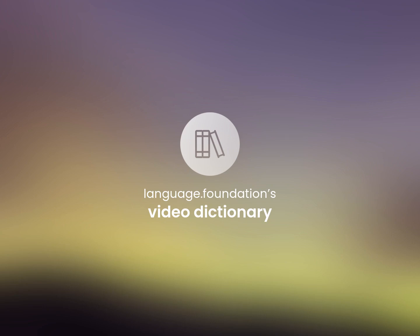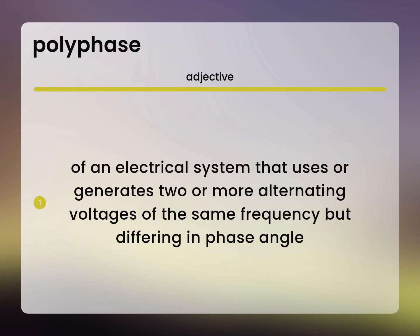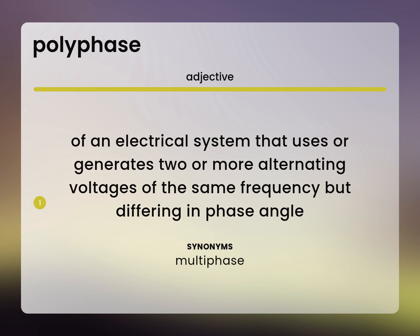Language.Foundation's Video Dictionary, helping you achieve understanding of an electrical system that uses or generates two or more alternating voltages of the same frequency but differing in phase angle. Multiphase.